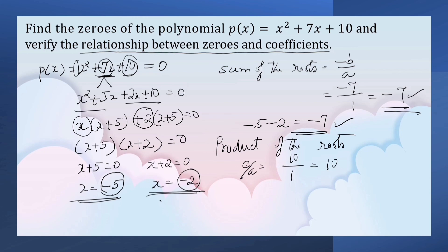So multiply the roots: -5 into -2 = 10. So this is equal to this. So it is verified.